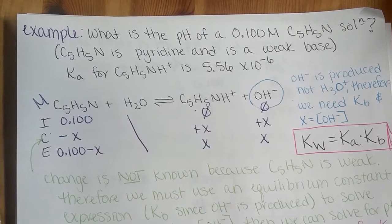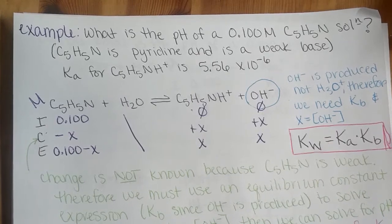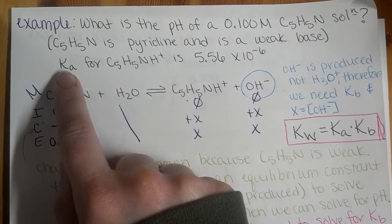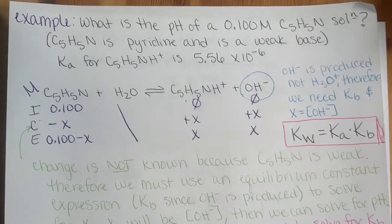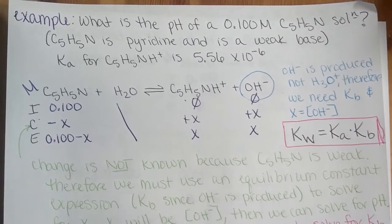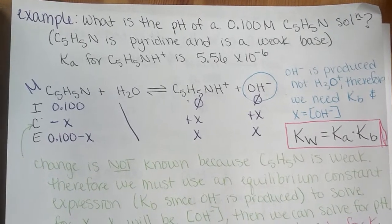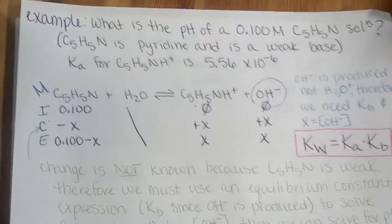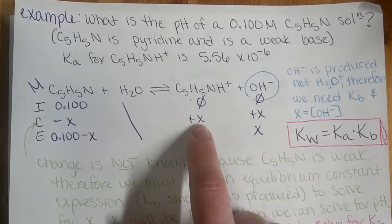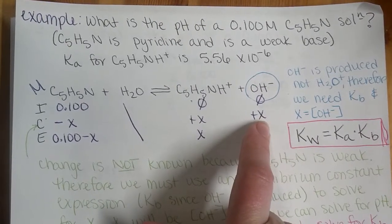And we don't know how much our change is going to be because this is a weak base, and that is proven by the fact that we're given an equilibrium constant. If we weren't given an equilibrium constant, you might want to consider it being a strong acid or a base, and the change would then be known. Sometimes you're just not given a Ka because you're expected to know how to look it up.